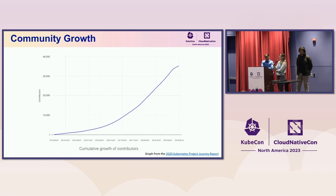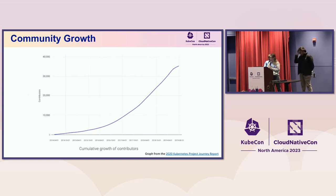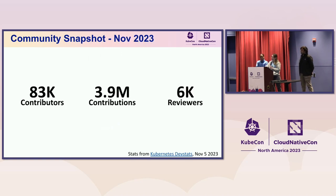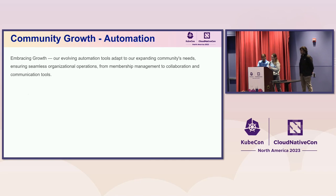Community growth — I mentioned earlier that GitHub is really hard for us to manage because the Kubernetes community is ridiculously enormous. This is a graph from a report from 2019, showing all the way from 2014 when the project first started. You can see how incredibly fast that growth curve is from 2014 to 2019, where it ends around 35,000 contributors. Today, judging by DevStats from two days ago, we have around 83,000 contributors making around 3.9 million contributions, reviewed by only about 6,000 reviewers. So you can see that we have scale problems.